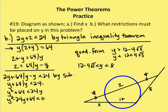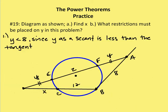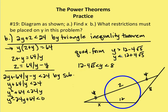Since 12 plus 4 root 5 is greater than 8, and Y must already be less than 8, that upper bound becomes irrelevant. So the final restriction is: Y is greater than (12 minus 4 root 5) and less than 8. This process was a little complicated — you can go back and re-listen if needed.